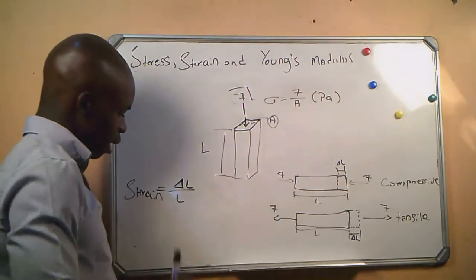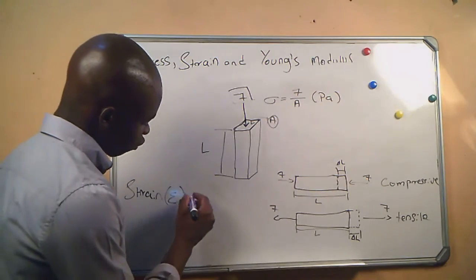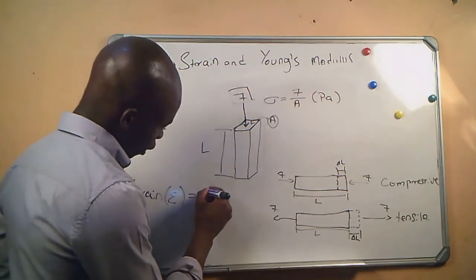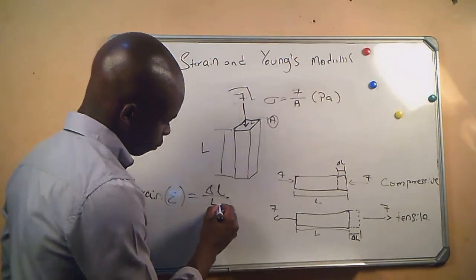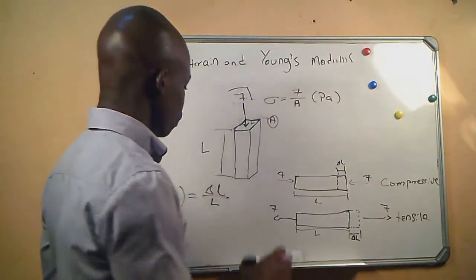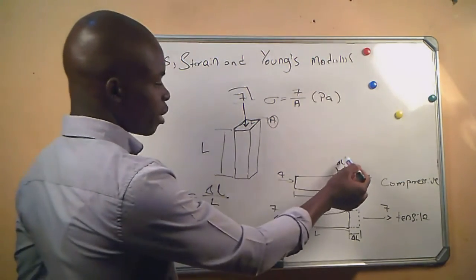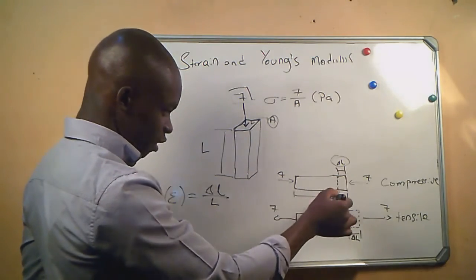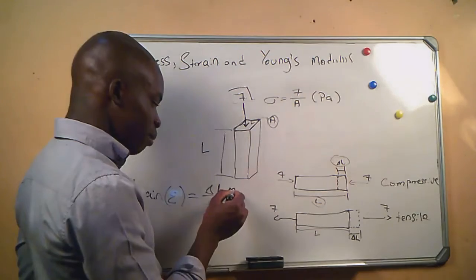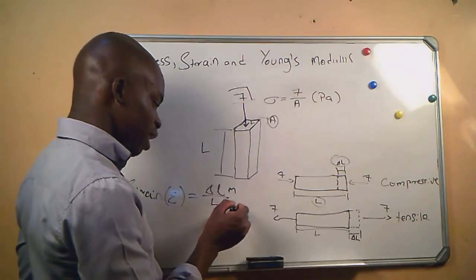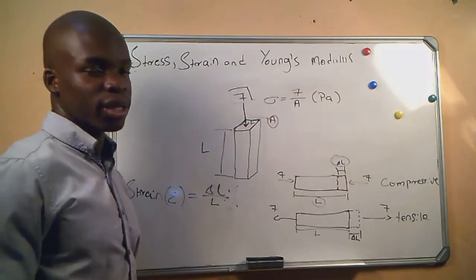Strain is represented by its symbol and is given by the change in length divided by the original length. Since both values are in meters and they cancel out, strain has no SI unit.